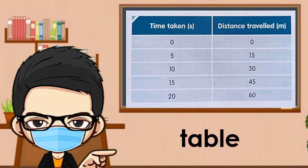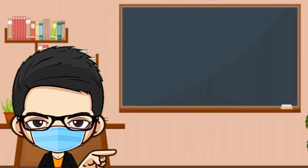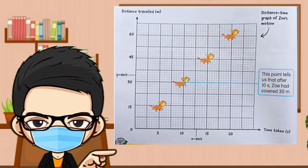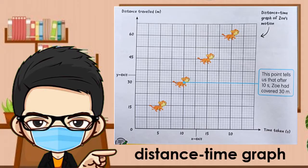Then, we can also represent Kitty's motion using a table as shown. Besides, we can represent Kitty's motion by drawing a graph. The graph shows how the distance Kitty covered changes with time. This type of graph is called a distance-time graph.